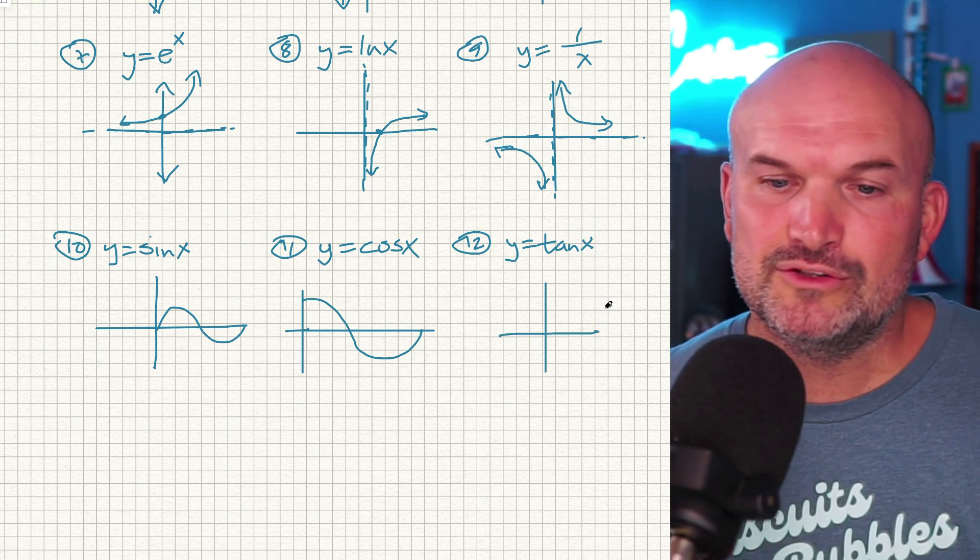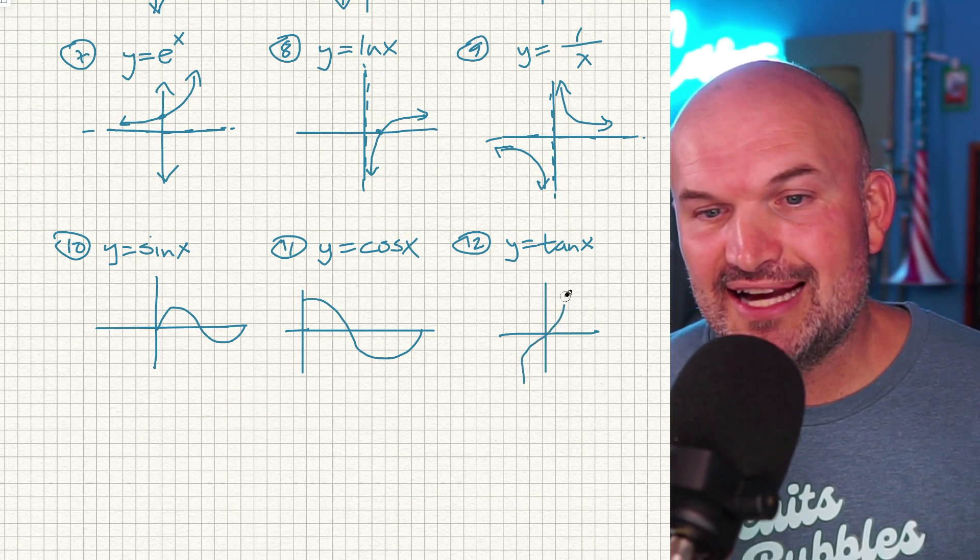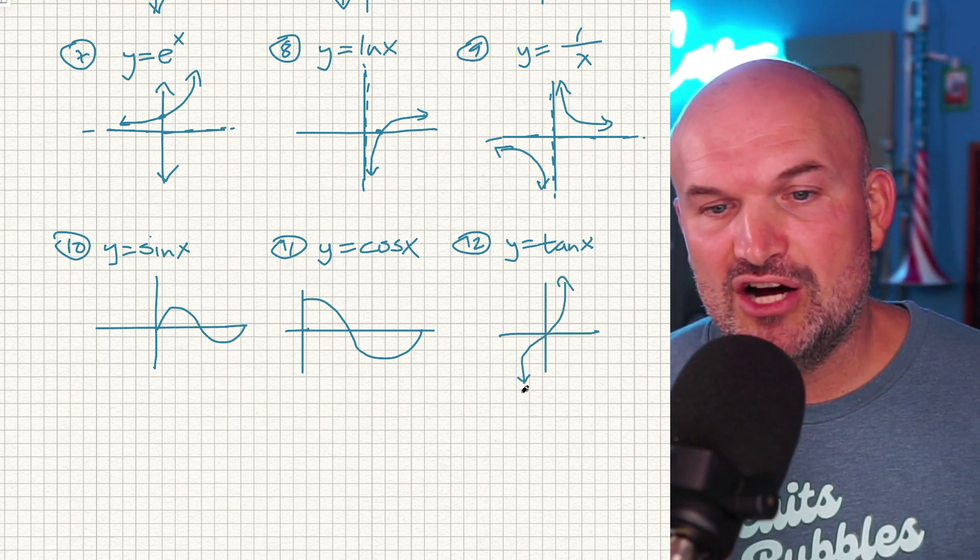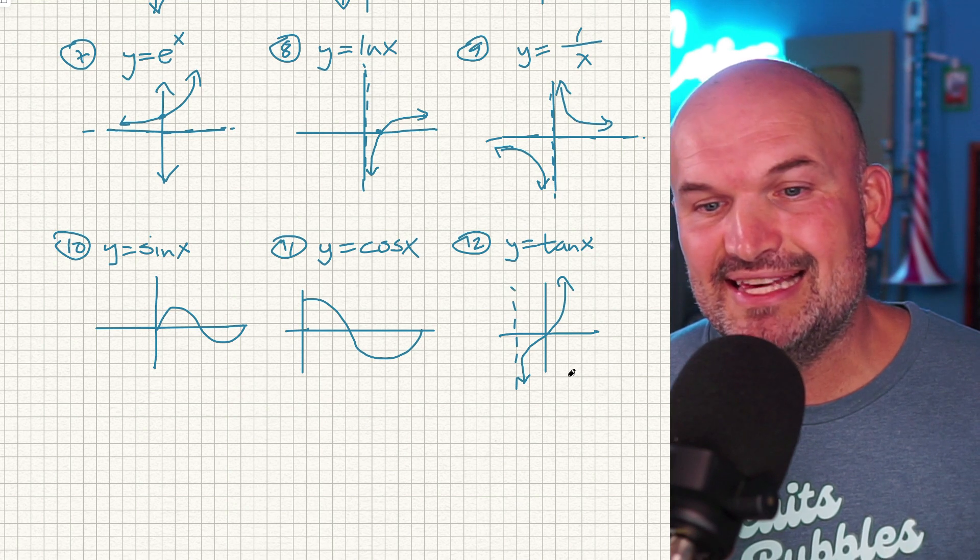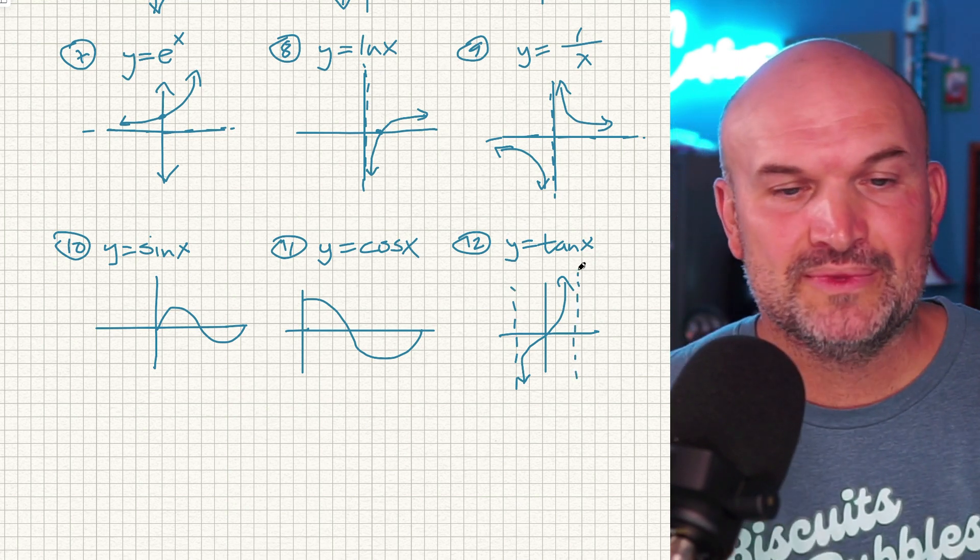The tangent graph is going to look kind of like the cubic graph, but it's also going to have some asymptotes. And this pattern is going to repeat to the left and to the right. So if you don't want this chicken scratch kind of notes, you want something nice and printable, go ahead and download the sheet down below. It's absolutely free.